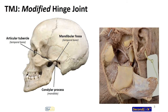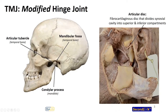The bony portions we discussed in the last video are the mandibular fossa of the temporal bone, and the condylar process that sits nicely within it from the mandible, and then that articular tubercle found anteriorly. The other important part of this joint is going to be that articular disc. This is a disc of fibrocartilage, and it acts to separate the joint cavity into two specific compartments — which is why we have this key term: modified.